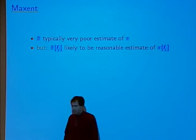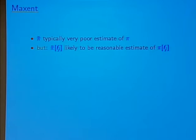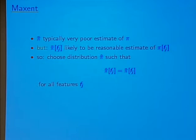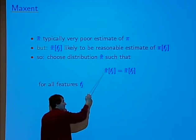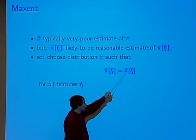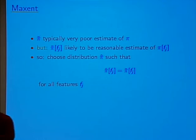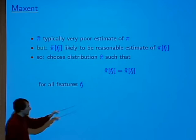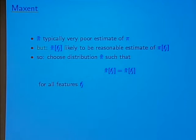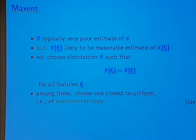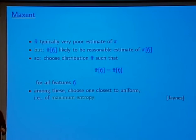On the other hand, the empirical average of any one of these features is likely to be a pretty good estimate of its true expectation — this is just the law of large numbers. The idea is to choose a distribution pi-hat so that when you take the expectation with respect to that estimated distribution, it's equal to the empirical average of each feature. These constraints correspond exactly to the facts I talked about at the beginning.